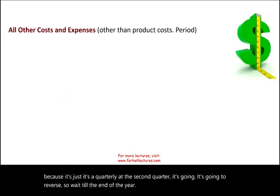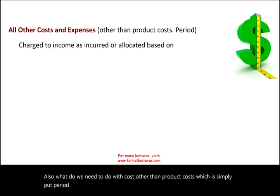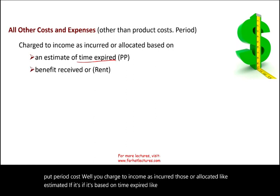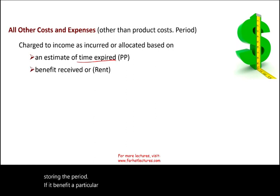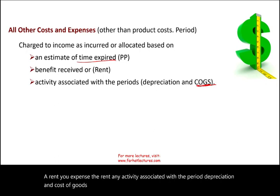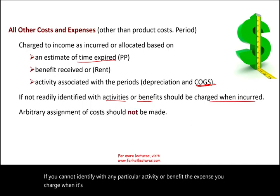For costs other than product costs — period costs — you charge to income as incurred or allocated. If it's based on time expired, like prepaid expenses, you expense during the period. If it benefits a particular period, like rent, you expense it then. Depreciation and cost of goods sold are good examples of costs expensed during the period. If you cannot identify a cost with any particular activity, you charge it when incurred. You should not do arbitrary assignment of costs.